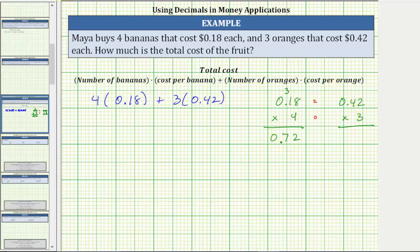For the next product, again notice how 0.42 has two decimal places and three has zero decimal places. Once again the product must contain two decimal places.